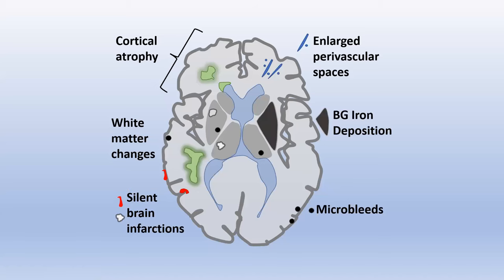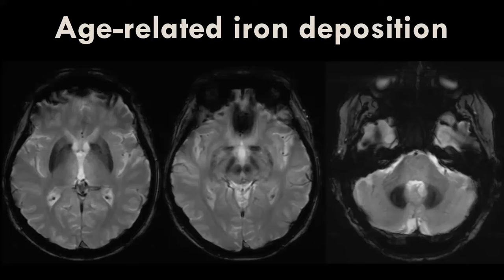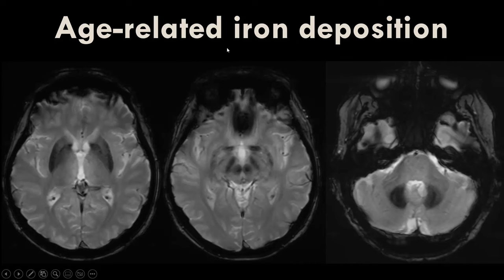Finally, accumulation of iron in the basal ganglia is typically seen on susceptibility-weighted and T2-star images. In elderly patients, the basal ganglia often become dark on these sequences — low signal in the lentiform nucleus, caudate nucleus, substantia nigra, red nucleus, and dentate nucleus. The exact significance is still unclear. Several rare disorders are associated with abnormal iron deposition — neurodegeneration with brain iron accumulation — but they have very specific patterns. This topic is just highlighted to show that it is something you can also see in the elderly.